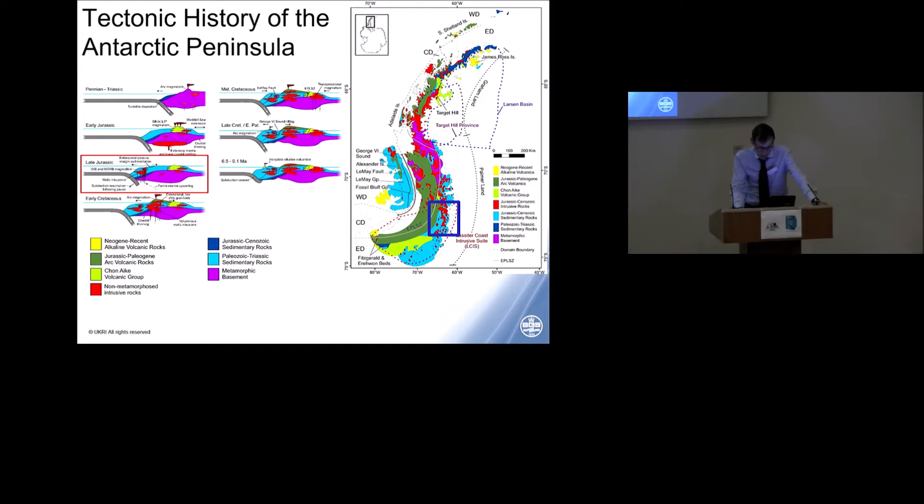A quiescence in subduction and related magmatism occurred in the late Jurassic, but as subduction started again, extensive passive margin sedimentation occurred in the west of the peninsula on Alexander Island and Adelaide Island, which are the two islands you see on the right-hand side of the diagram there.